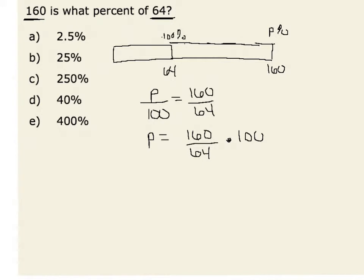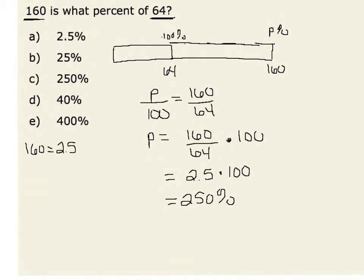Taking 160 and dividing it by 64, we get 2 and 1/2. Changing that into a percent by multiplying by 100 gives us 250%. One way to look at this is that 160 is 2 and 1/2 times as big as 64, so 64 times 2 and 1/2 would indeed give us 160.